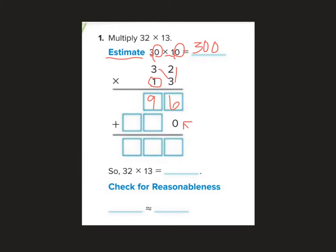Okay, 3 times 2 is 6, 3 times 3 is 9. Then we have our zero here because we're going through and multiplying everything by 10. So if I just put my zero here, then I can multiply everything by 1. 1 times 2 is 2, 1 times 3 is 3. Add up 6 and 0 is 6, 9 and 2 is 11, 1 and 3 is 4. So my answer is 416.